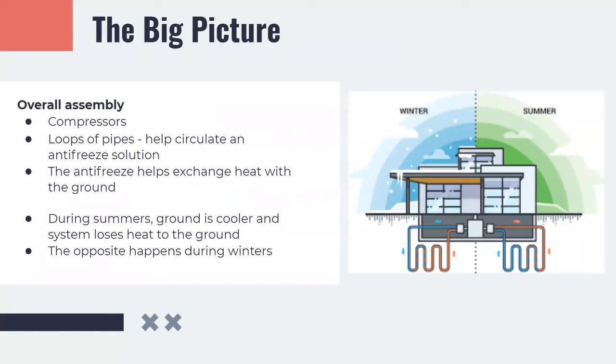The overall assembly shown in this slide consists of a compressor and loops of pipes in the ground which help circulate the antifreeze solution. The antifreeze solution helps exchange heat with the ground. During summers, the ground is at a lower temperature compared to the ambient air and hence the system loses heat to the ground. The opposite happens during the winters when the ground is at a higher temperature and the system gains heat from the ground.